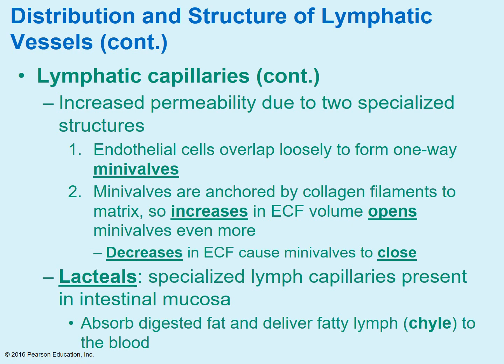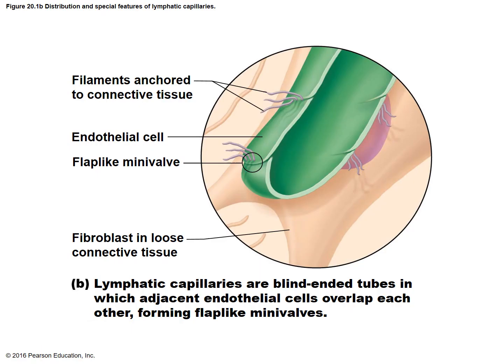Within the lymphatic capillaries, there are overlapping cells that form little mini-valves. They're anchored in place. As the interstitial fluid increases, it's going to open those valves even more. As the interstitial fluid decreases, the mini-valves close. So they are able to respond to the amount of fluid in the interstitial space. Lacteals are specialized capillaries in the intestinal mucosa that absorb digestive fat and help deliver this fatty lymph into the blood. The diagram shows these little flaps — the mini-valves — anchored in place by filaments.